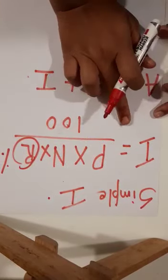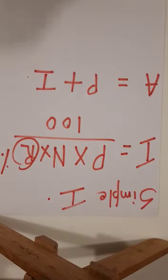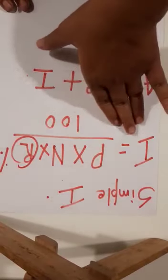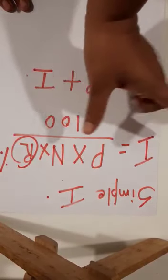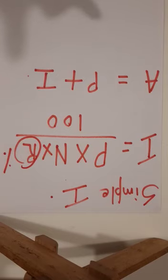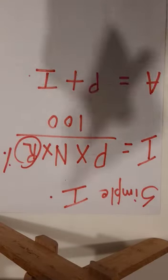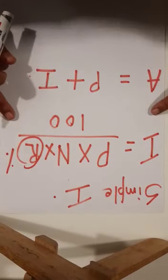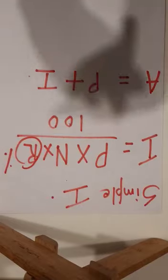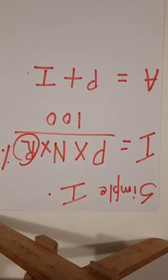Amount is equal to Principal plus Interest. Please read your question properly and only then decide: some questions will only ask you to find the interest, and in some questions they may also ask you to find the total amount or the total money you will get at the end of the year. That is when you will use the second formula. Learn these two formulas very well before solving the sums.